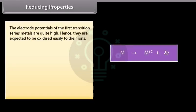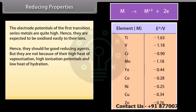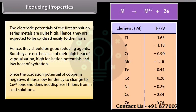The electrode potential of the first transition series metals is quite high, so they are expected to be oxidized easily to their ions and should be good reducing agents. But they are not, because of their high heat of vaporization, high ionization potentials, and low heat of hydration. Since the oxidation potential of copper is negative, it has a low tendency to change to Cu²⁺ ions and does not displace H⁺ ions from acid solutions.